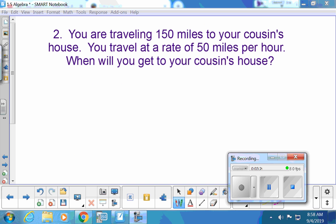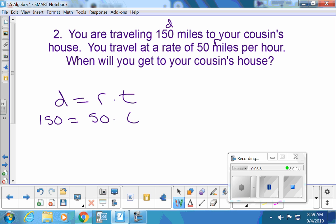You are traveling 150 miles to your cousin's house. Is that a distance, or a rate, or a time? That's a distance. You travel at a rate of 50 miles per hour. That's a rate. So this is a distance. This is a rate. When will you get to your cousin's house? So we're going to be trying to find the time. So my 150 is my distance. My 50 is my rate. And I'm going to be trying to find my time.